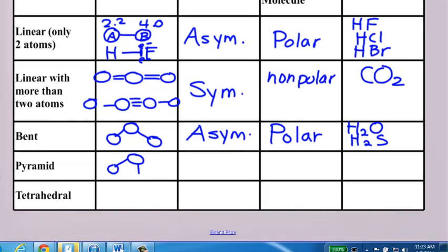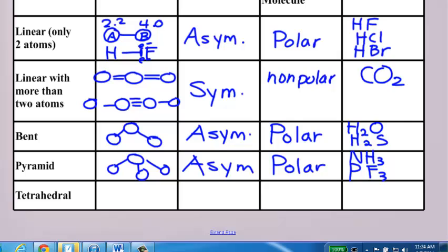Pyramid, central atom three bonds, that is also asymmetrical. And of course, if you're asymmetrical, then you are an overall polar molecule. You have partial charges. The most classic example of that is NH3. Sometimes they might give you, like, PF3, something along those lines. But typically, it's NH3. These are the ones they ask all the time. NH3, H2O, CO2, HF, HCl. Those are the ones you're going to get.